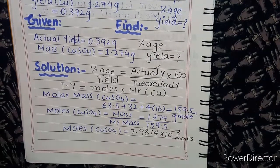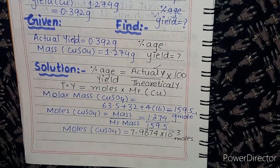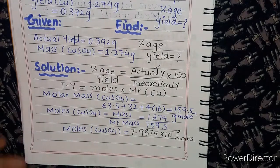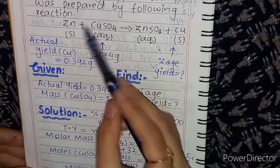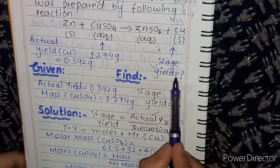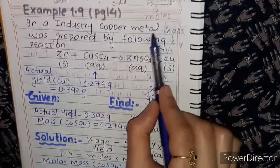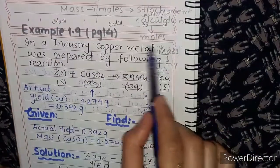These moles will now be used in the second step: the stoichiometric calculation using the comparison method, which is easy. We will compare CuSO₄ and Cu because we need to find copper — we will find moles and then find the theoretical yield.